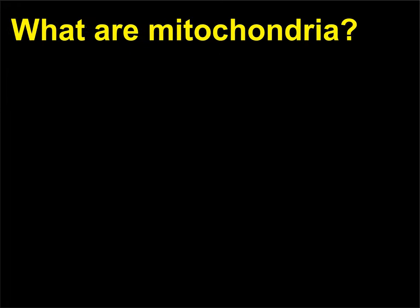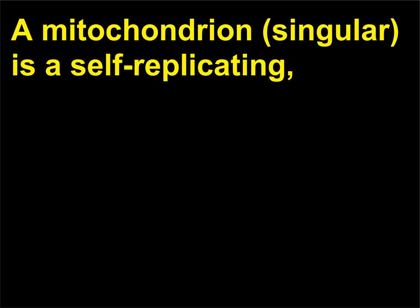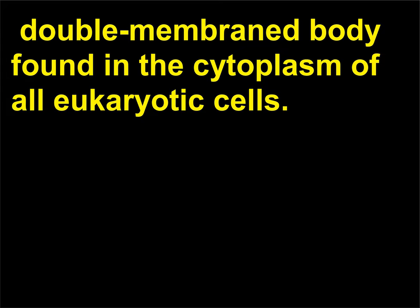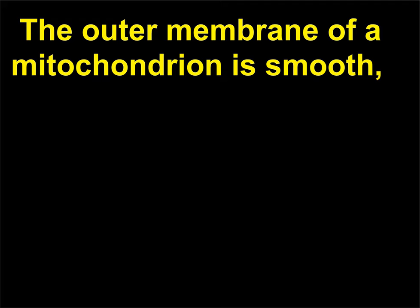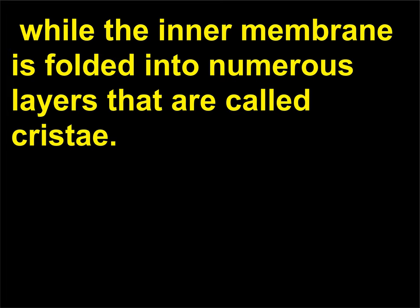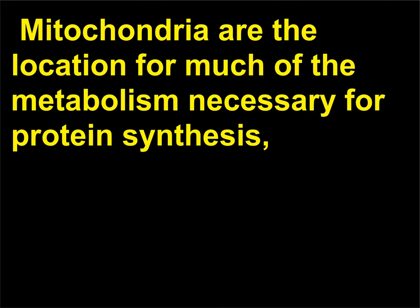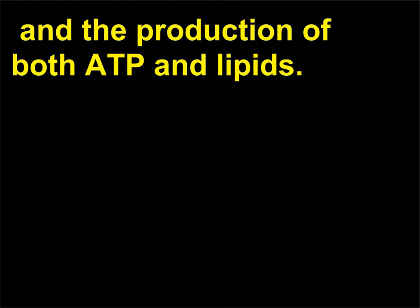What are mitochondria? A mitochondrion (singular) is a self-replicating, double-membraned body found in the cytoplasm of all eukaryotic cells. The outer membrane of a mitochondrion is smooth, while the inner membrane is folded into numerous layers called cristae. Mitochondria are the location for much of the metabolism necessary for protein synthesis and the production of both ATP and lipids.